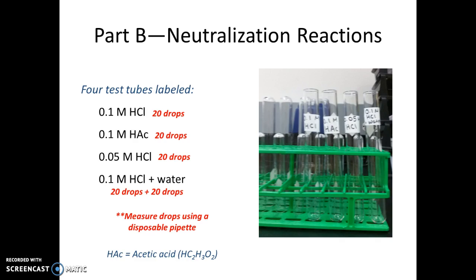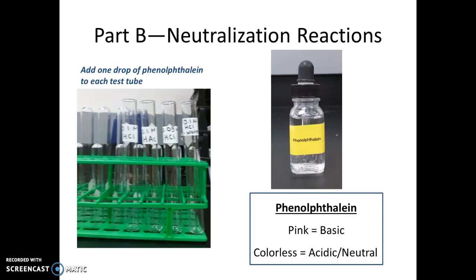To measure drops quantitatively, use the plastic disposable pipettes from the back of the lab room — their narrow tips produce uniform drops when counting out 20 drops per solution. Once acids are added to all test tubes, add one drop of phenolphthalein to each. Since the solutions are acidic, you won't see any color change yet, but the phenolphthalein is needed to indicate when neutralization has been reached.